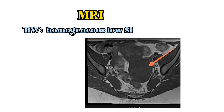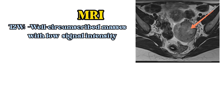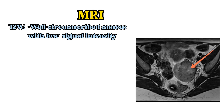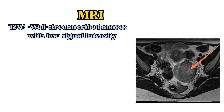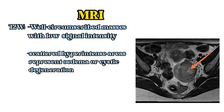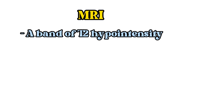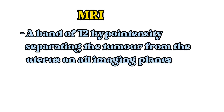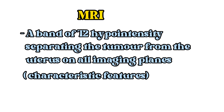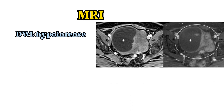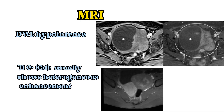On MRI scan, fibromas usually demonstrate a homogeneous low signal intensity on T1-weighted images and appear as well-circumscribed masses with low signal intensity on T2-weighted images. Fibromas may contain scattered hyperintense areas representing edema or cystic degeneration. A band of T2 hypointensity separating the tumor from the uterus on all imaging planes is also considered a characteristic feature. Fibromas appear hypointense on diffusion-weighted images and show heterogeneous enhancement on post-contrast images.